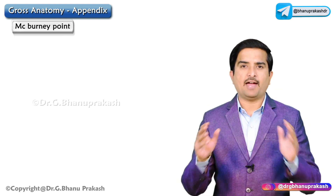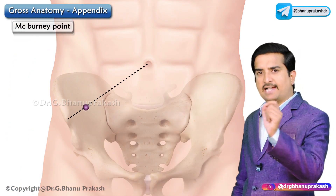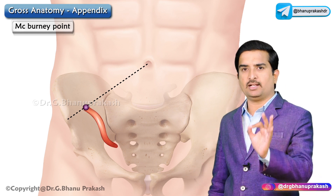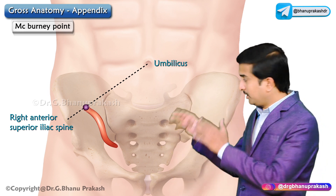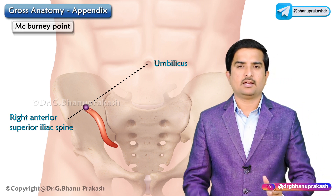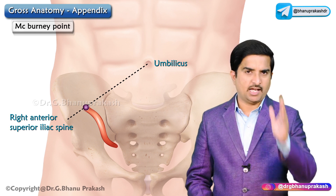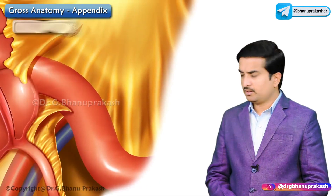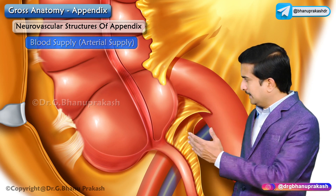McBurney's point is very important for every medical student to know. It lies at the junction of the lateral one-third and the medial two-thirds of the line joining the right anterior superior iliac spine to the umbilicus. The site of maximum tenderness at this point is called McBurney's point, and maximum tenderness here is seen in appendicitis, which is inflammation of the appendix.